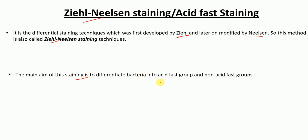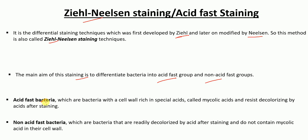The aim of Ziehl-Neelsen staining is to differentiate between acid-fast and non-acid-fast bacteria. Acid-fast bacteria have a cell wall rich in mycolic acids and resist decolorization by acids after staining. Non-acid-fast bacteria do not have mycolic acids in their cell wall and are readily decolorized by acids after staining.